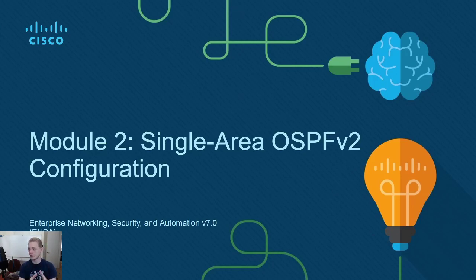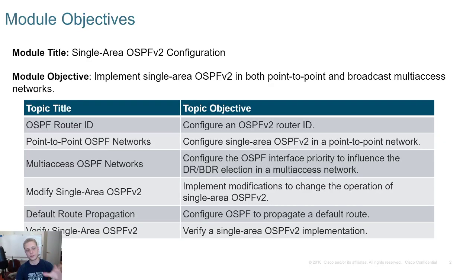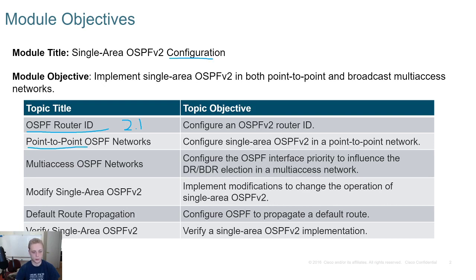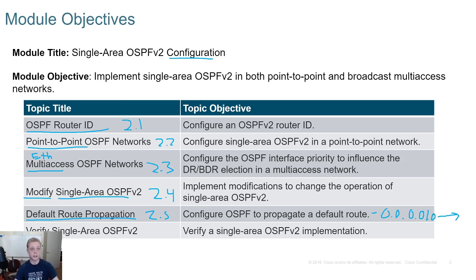We're going to talk about Module 2 - single area OSPF actual configuration. Specifically, we'll cover OSPF router IDs (2.1), point-to-point OSPF networks (2.2), multi-access Ethernet (2.3), modifying single area OSPF configuration (2.4), default route propagation (2.5) - super important, that's the zero route that tells us how to get to the internet - and then we'll verify everything using show commands in 2.6.